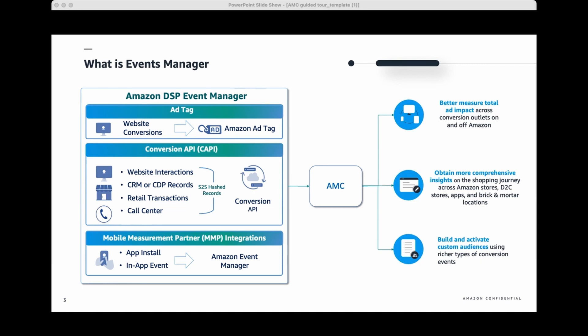Events Manager functionality helps prepare advertisers for a cookie-less world. It allows the passing of hashed email addresses or other identifiers to measure events in cookie-less environments. By accessing these signals in AMC, customers will now be able to perform custom attribution, measure the full customer journey, and unlock various other advanced capabilities that were previously unavailable. This empowers advertisers to gain a more comprehensive understanding of their cross-channel marketing performance and make more informed optimization decisions.